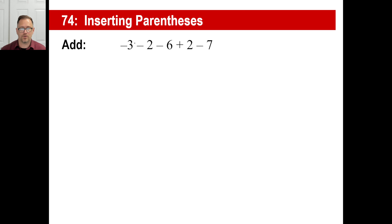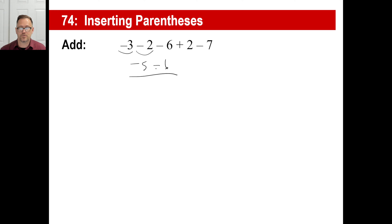I can do this without parentheses this time. Negative three plus a negative two — those are both the same sign — so add the absolute values: five. And take the negative sign, so negative five. So negative five minus six — both the same signs — add the absolute values: five plus six is eleven, and take the same sign — a negative eleven.